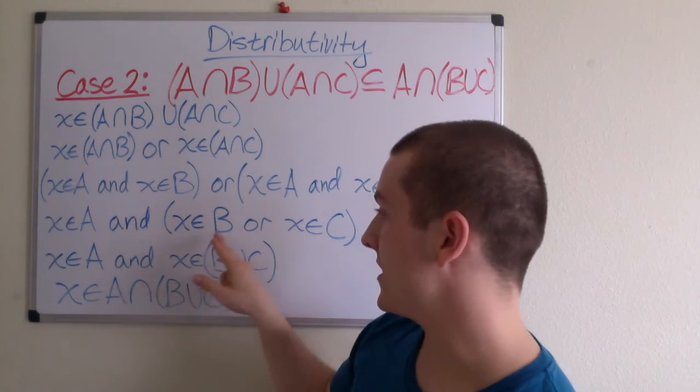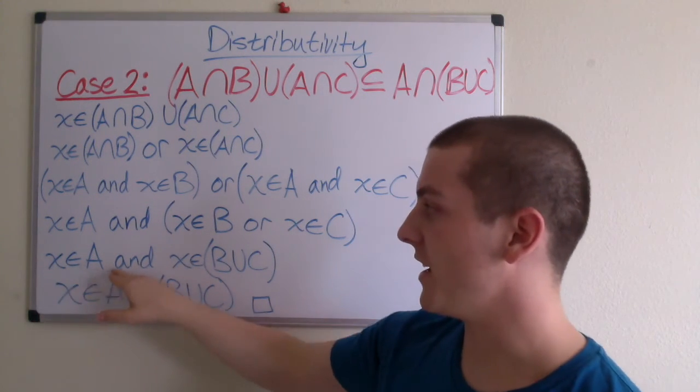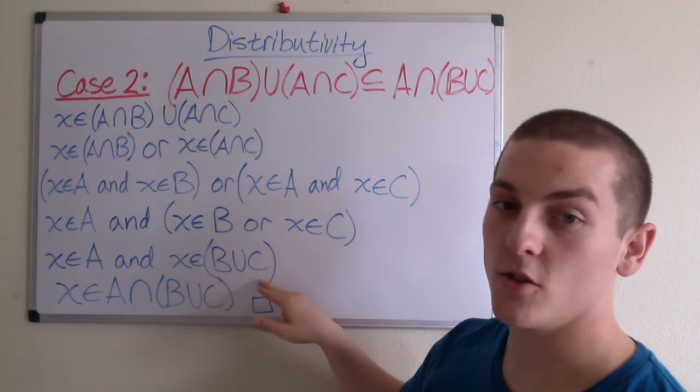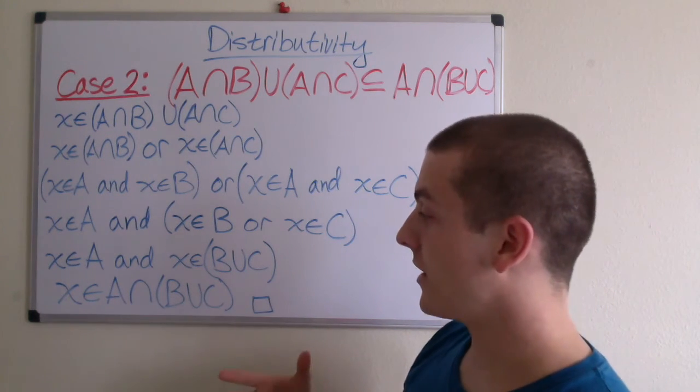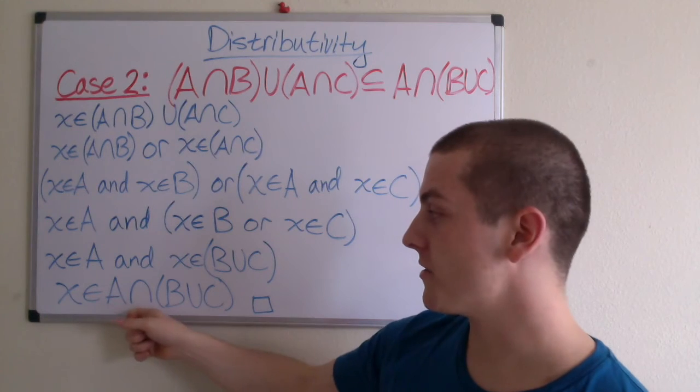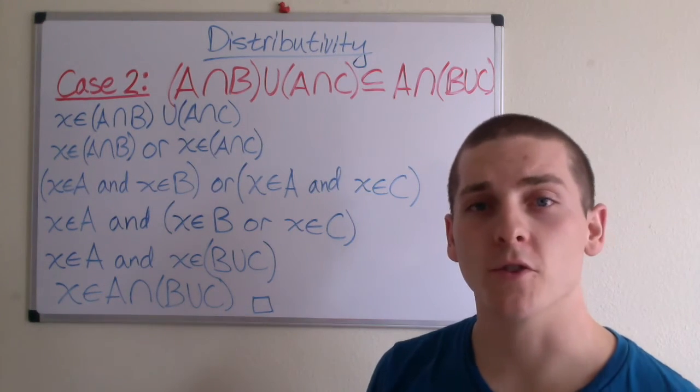And from here, we can, by definition, write X is an element of A and X is an element of B union C. Which, finally, we can state X is an element of A intersection B union C, which is what we wanted to show.